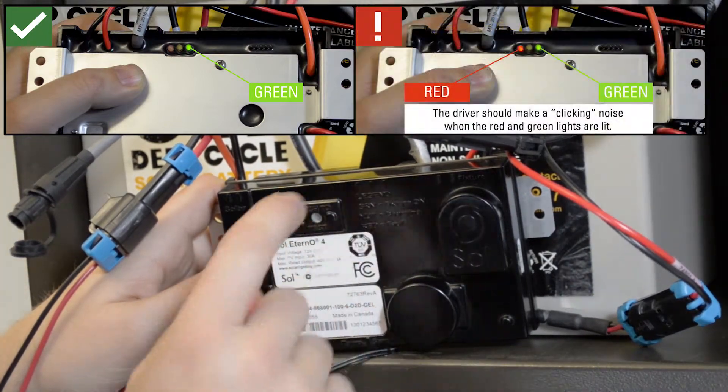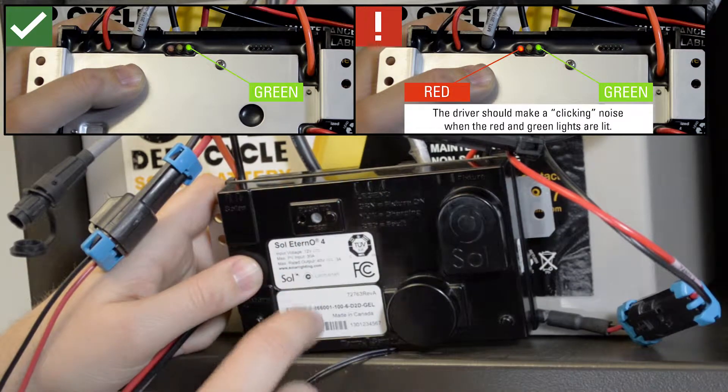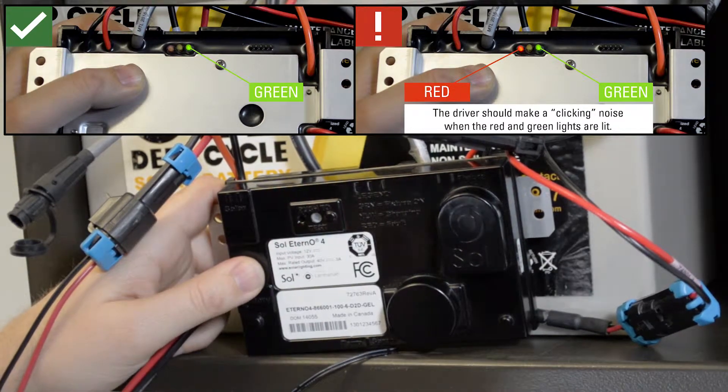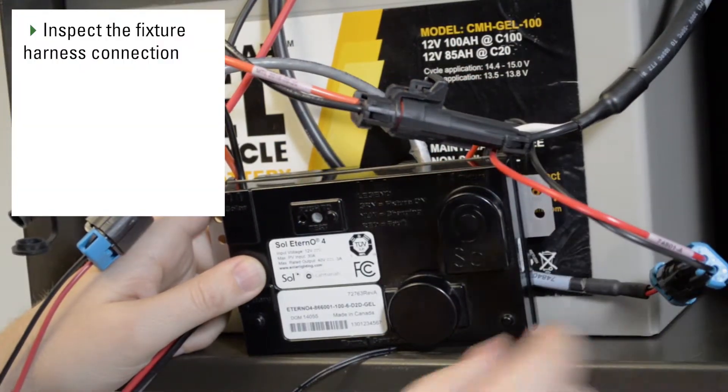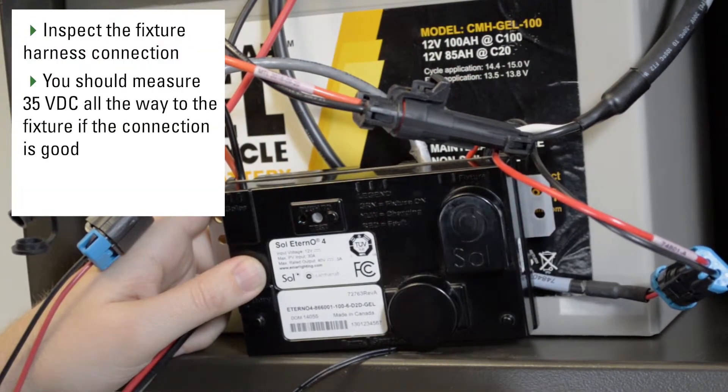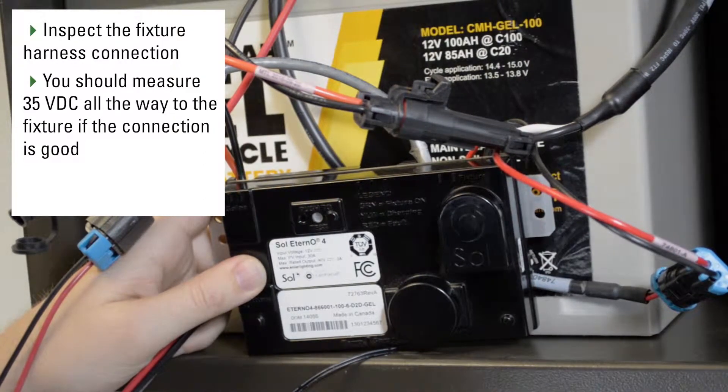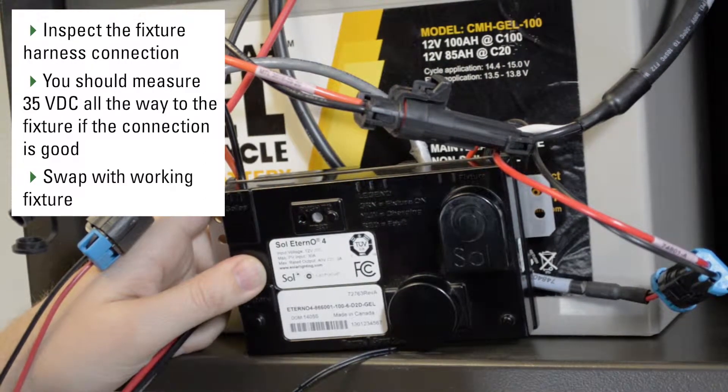If it doesn't, you'll have a green and red solid indicator light and that means there's either a poor connection or you have an issue with the fixture. Trace connectivity using the fixture harness to the fixture, or if you have another fixture on site that you know is good, test to make sure that the fixture is operational.